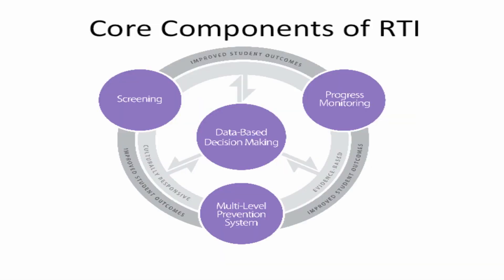The RTI framework and its core components — Screening, Progress Monitoring, Multi-Tiered Prevention Systems, and Data-Based Decision-Making — can help educators answer some of these questions and establish whether a student's academic difficulties are the result of a print-based disability related to a reading or learning-based disability, or a lack of exposure to quality core instruction and interventions.